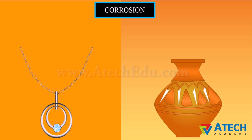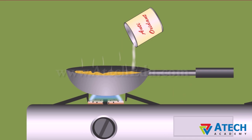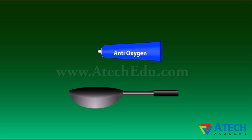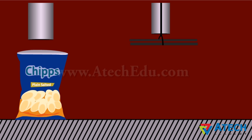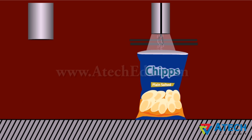The black coating on silver and the green coating on copper are other examples of corrosion. Rancidity is a condition produced when fats and oils are oxidized and their smell and taste become unpleasant. Rancidity can be prevented by adding antioxidants to foods containing fats and oils, or by packing foods like chips in nitrogen gas — chips bags are flushed with nitrogen gas prior to packaging.